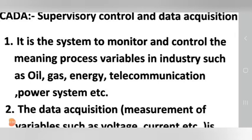Different industries in India — such as oil and gas, energy, telecommunications, and power industries — use the SCADA system for monitoring and controlling process variables.